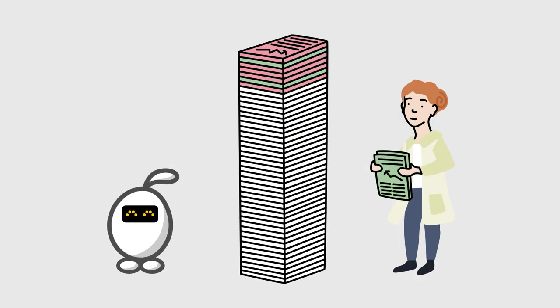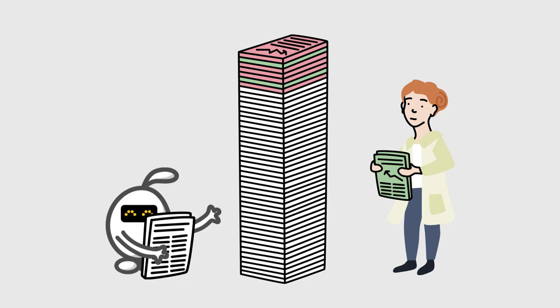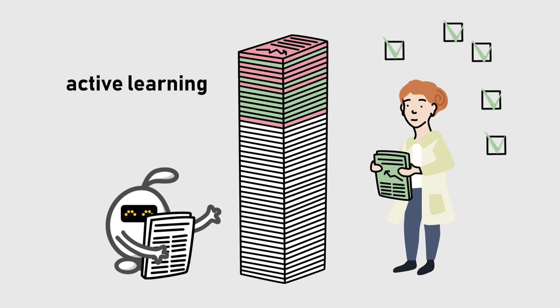After each decision, it quickly rearranges the part of the stack that you haven't seen yet, and moves up the documents that are probably more relevant to you. While you work your way down, LS is continually reshuffling the rest, using an increasingly accurate guess of what you think is relevant. This is what is called active learning.